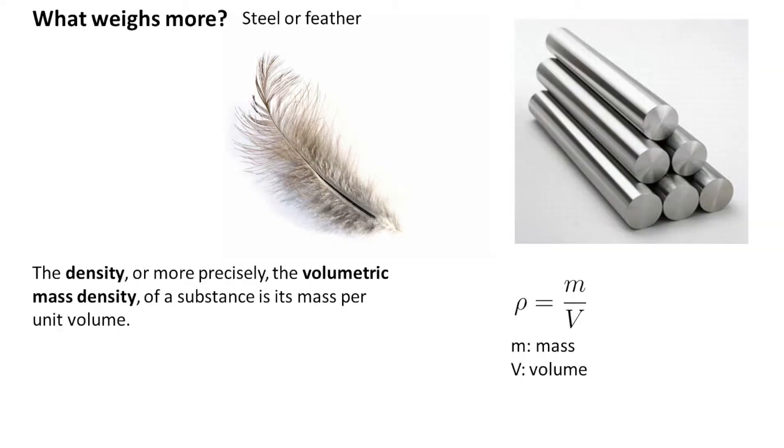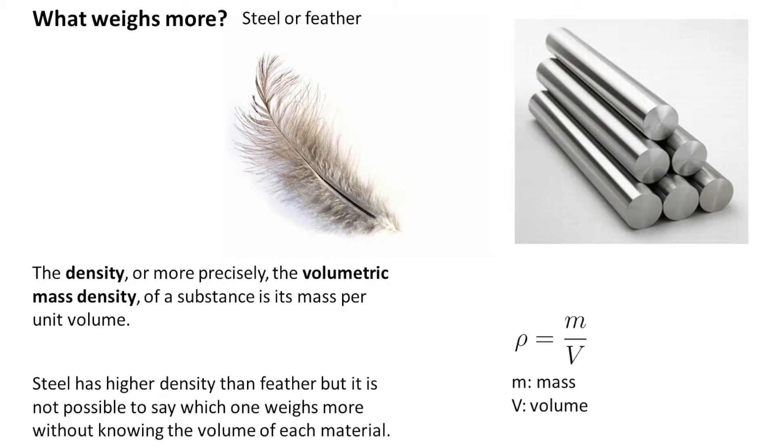While weight or mass depends on the type and amount of matter, density just depends on the type of material being examined. Steel has a higher density compared to feather, but it is not possible to answer which one weighs more without knowing the quantity of the materials.